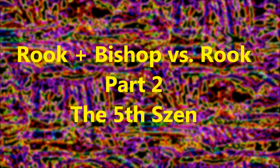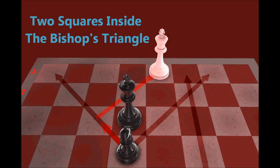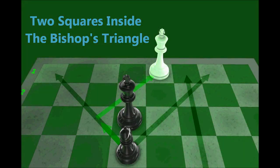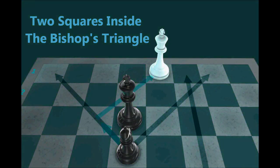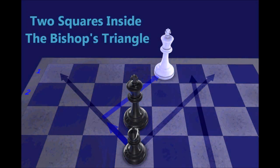Alright, this is the second video in a series dedicated to mastering Rook and Bishop vs. Rook. In the first video, I didn't go over the 5th Zen, so I'll do that in this video. But first, let's look at simpler positions where the Defender's King is two squares inside the Bishop's Triangle, but the Attacker's Rook occupies the file that the Defender's Rook would normally occupy when employing a Zen defense.